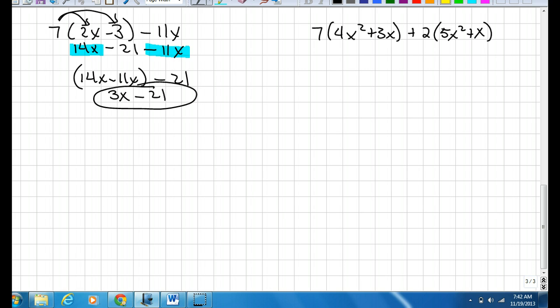On this example over here, we are going to have to distribute the 7 and the 2 to their groupings. So it'll be 7 times 4x squared and 7 times 3x. Now we'll do the same with the 2: 2 times 5x squared and 2 times x. Now we need to combine like terms. An x squared cannot be combined with just an x. So we need to find another x squared in this equation, and here it is.